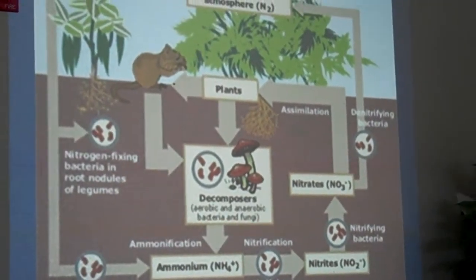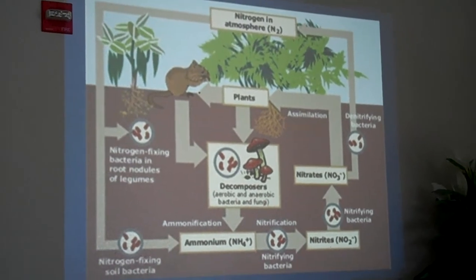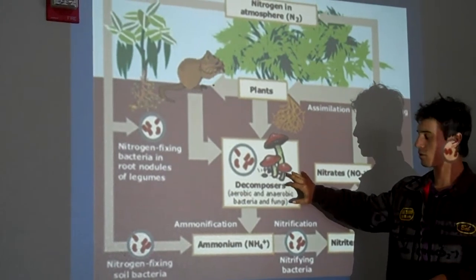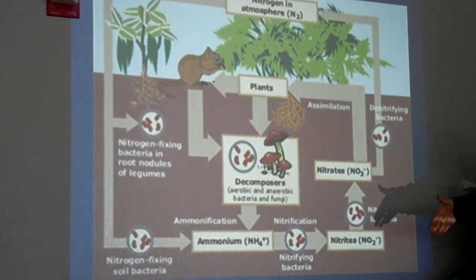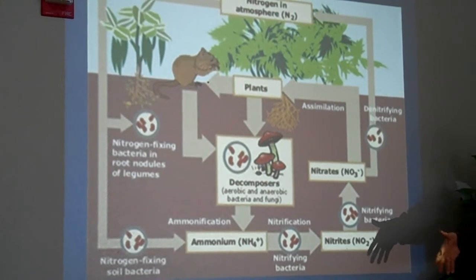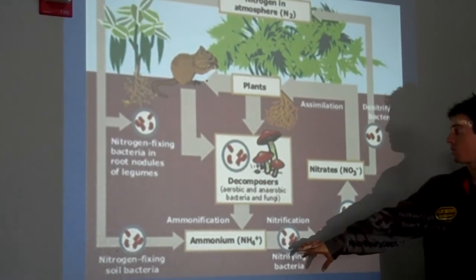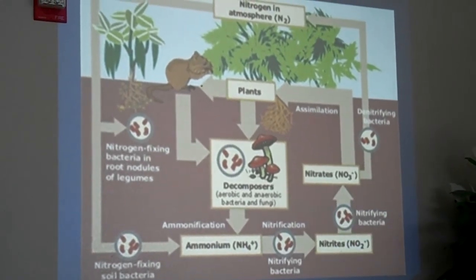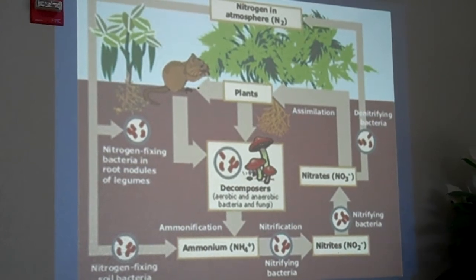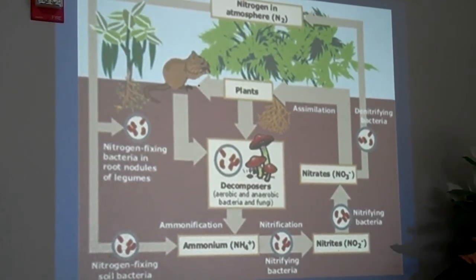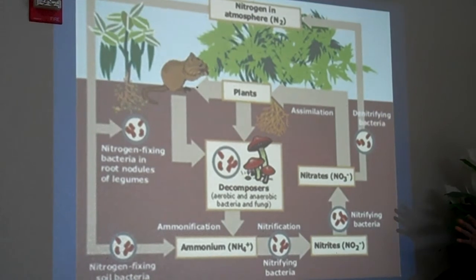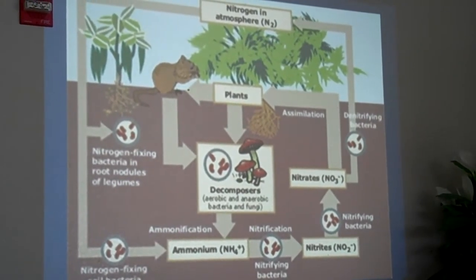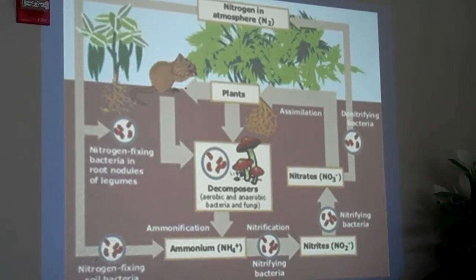Fungi produce a lot of acids, so they tend to acidify their environment and are usually found in a more acidic environment. Through nitrification, bacteria are able to convert some of the nitrogen being released by fungi in the form of ammonium and turn it into other forms like nitrate that are usable by other plants.